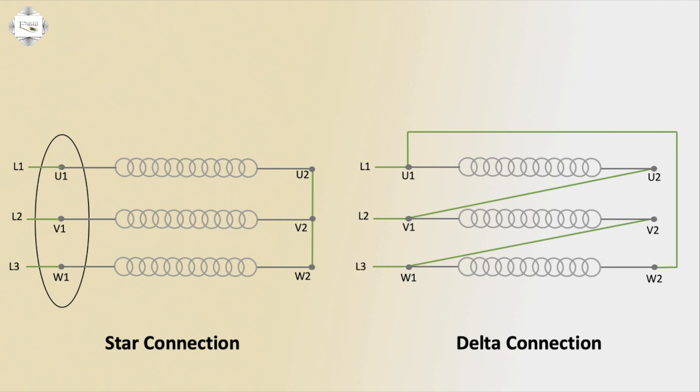L3 means blue connection. W1 and V2 connect to complete the full delta connection for the 3-phase motor.